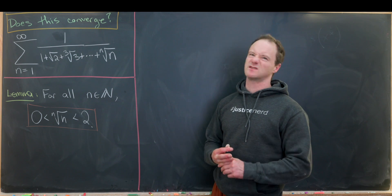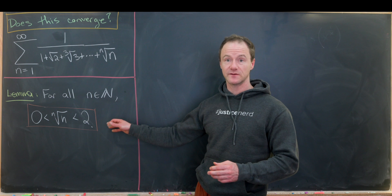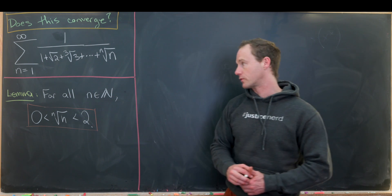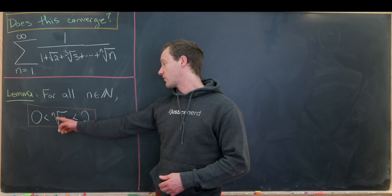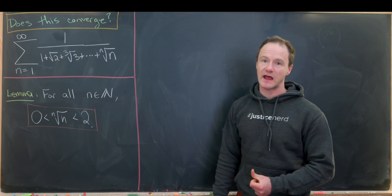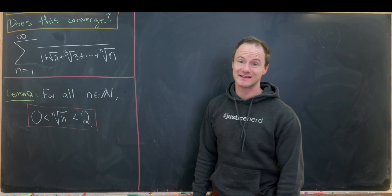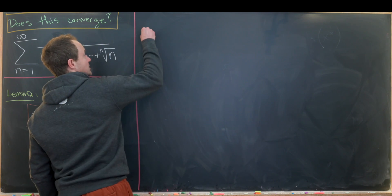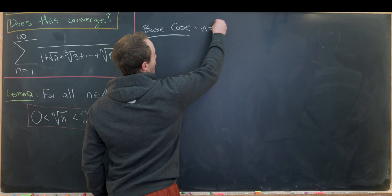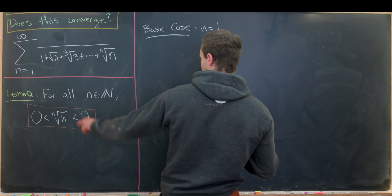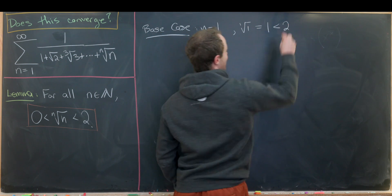So in the last board, we did some exploratory calculation that led us to writing down the following statement, which I've now called a lemma, and we will prove. And it says for all n, which are natural numbers, the nth root of n is between 0 and 2. So the fact that it's always positive is pretty clear. So let's show that it's going to be less than 2, and we'll do that by induction. So our base case will be the n equals 1 case. But what's the first root of 1? Well, that's kind of a silly way of just writing the number 1, which is definitely less than 2.